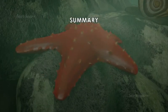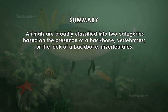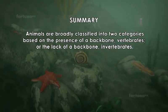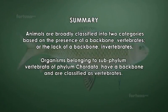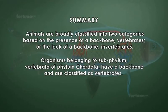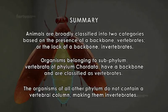Summary: Animals are broadly classified into two categories based on the presence of a backbone — vertebrates — or the lack of a backbone — invertebrates. Organisms belonging to subphylum Vertebrata of phylum Chordata have a backbone and are classified as vertebrates. The organisms of all other phyla do not contain a vertebral column, making them invertebrates.